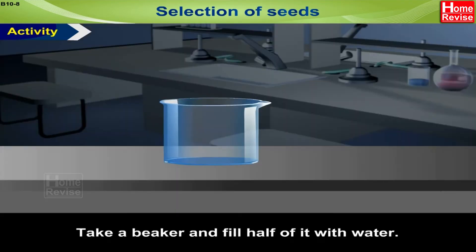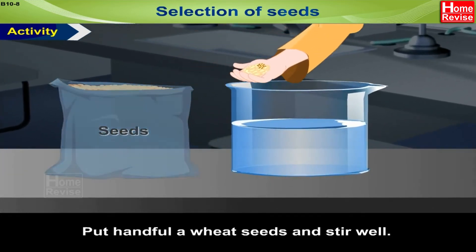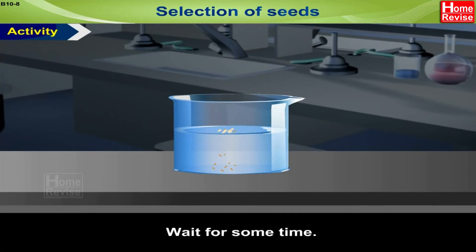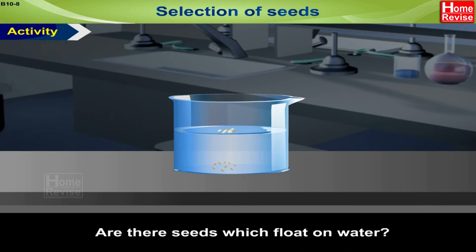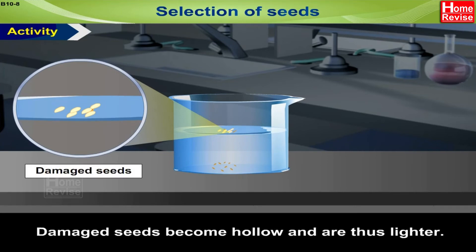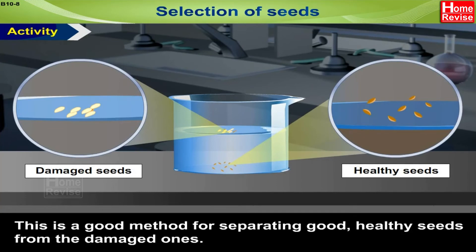Selection of seeds activity. Take a beaker and fill half of it with water. Put a handful of wheat seeds and stir well. Wait for some time. Are there seeds which float on the water? Yes — damaged seeds become hollow and are thus lighter, so they float on water. This is a good method for separating good, healthy seeds from the damaged ones.